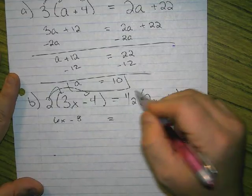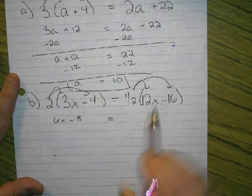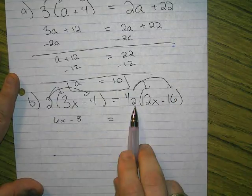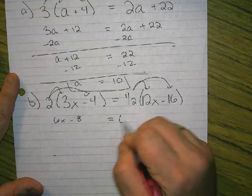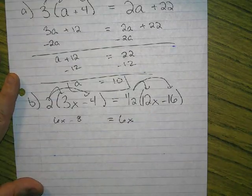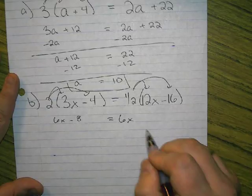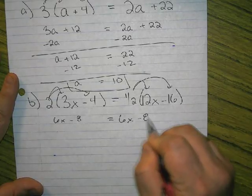Other side, all we're going to do is distribute the half. If you like it as a fraction you go 12 times 1 divided by 2, or you can just think a half, what's half of 12? 6, so half of 12x is 6x. What's half of negative 16? Negative 8.